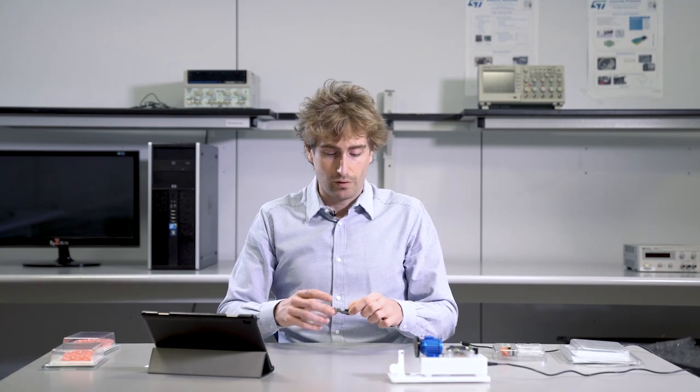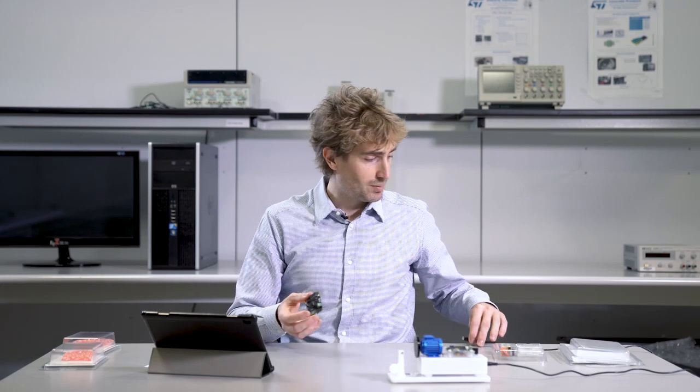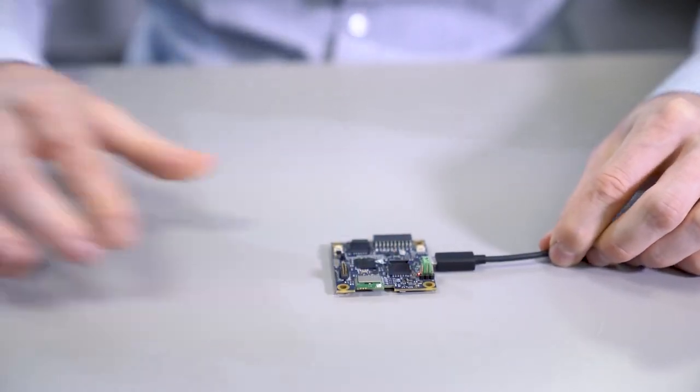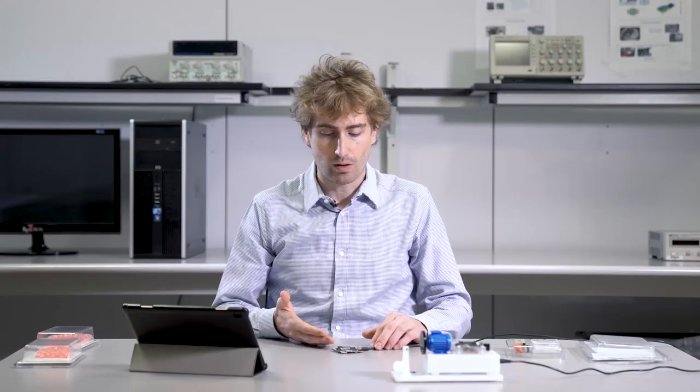Today, we are going to concentrate on the Bluetooth Low Energy connectivity and see how to use the pre-loaded demo software, which is the predictive maintenance function pack. First, we need to power on the ST-Win, and we could do that using a battery, but the easiest way is just to plug a micro USB cable. The ST-Win is now waiting for an external connection via Bluetooth.